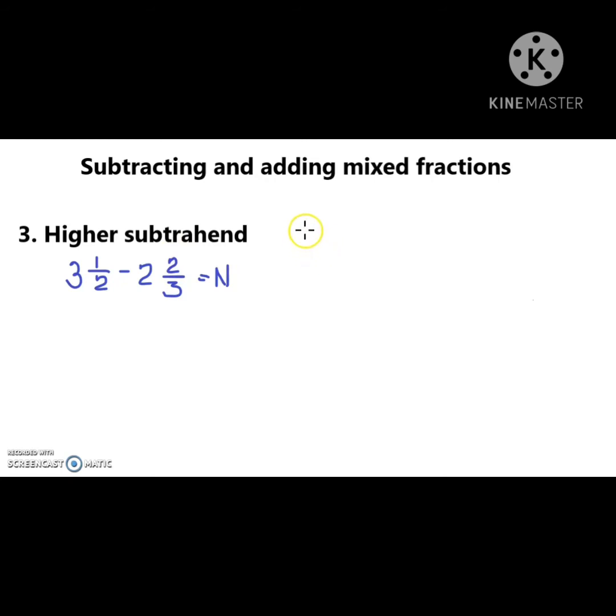Our first step again is to find the LCD, least common denominator, ng 2 at 3. Halapin natin yung multiples: 2, 4, 6, and then 3, 6, 9. So ang common multiple ng 2 and 3 is 6. So yan ang naging LCD natin.